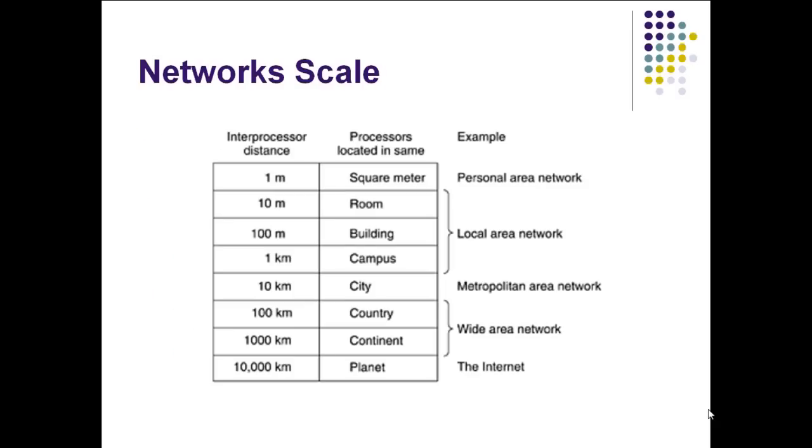Now we can divide or classify networks by different factors. One of the factors that is most common is by scale. How big or small your network is. You can see in the graph that you have personal area networks that are the smallest kinds of networks. They cover about one meter, one square meter in range.